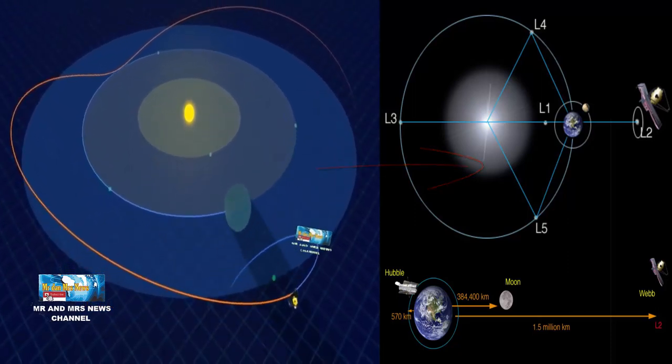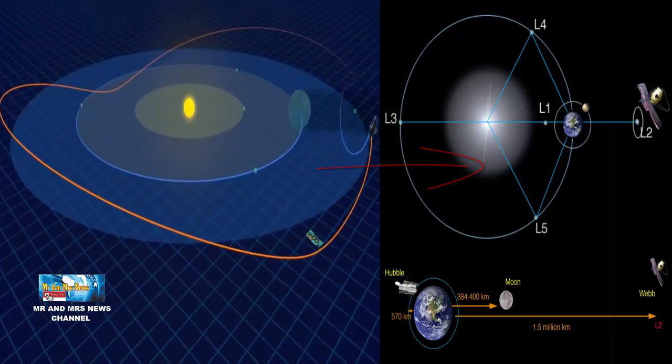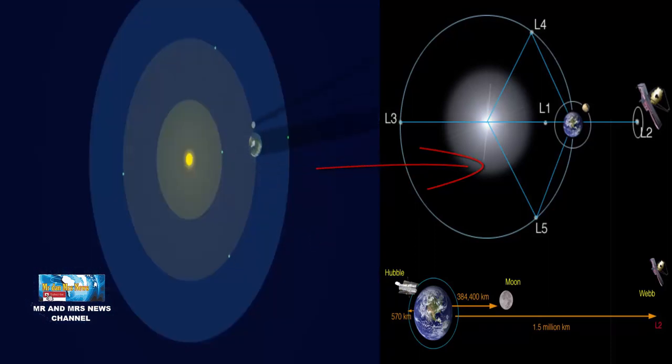Sebenarnya, satelit mengorbit di sekitar titik L2, seperti yang bisa dilihat diagram, mereka tidak sepenuhnya tidak bergerak di tempat yang tetap.